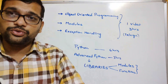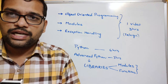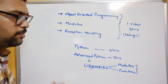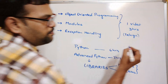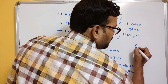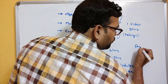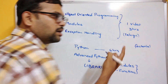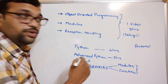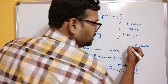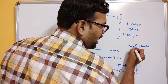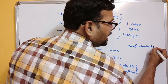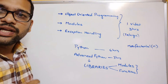We can directly use modules and functions — we don't need to write all the code ourselves. For example, to find a factorial, we don't need to write code. As we saw in the six-hour video, using the math module — math.factorial(n) — we can directly get the factorial of n. We don't need to write the code ourselves.